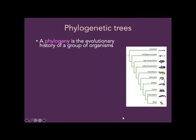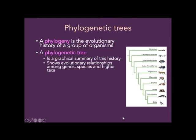We need to go over some vocabulary. The first word is phylogeny — phylogeny is the evolutionary history of a group of organisms. A phylogenetic tree is a graphical summary of a phylogeny. Sometimes people use the word phylogeny when they mean phylogenetic tree — that's fine.